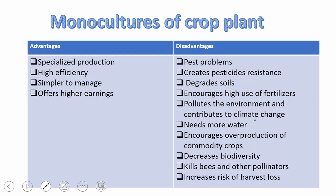Monocultures have advantages like specialized production. Farmers specialize in producing, say, wheat seeds, growing them over and over, which makes them highly knowledgeable about the best practices to grow those plants — making it highly efficient. Doing the same thing over and over gives experience, and experience reduces cost. Dealing with one plant also makes it simpler to manage, and reducing costs ultimately increases earnings.